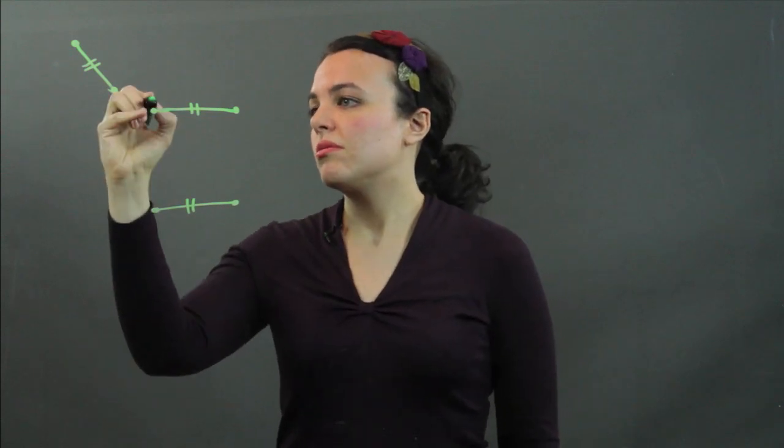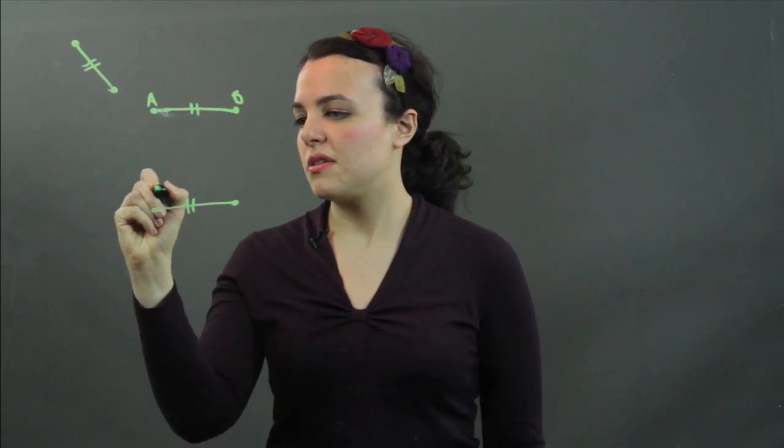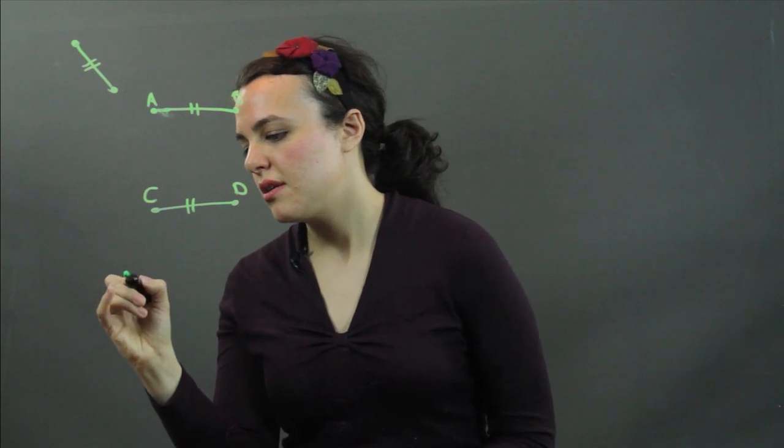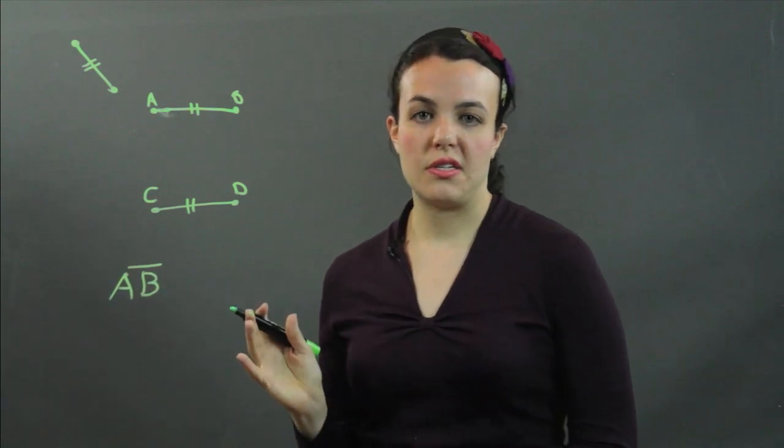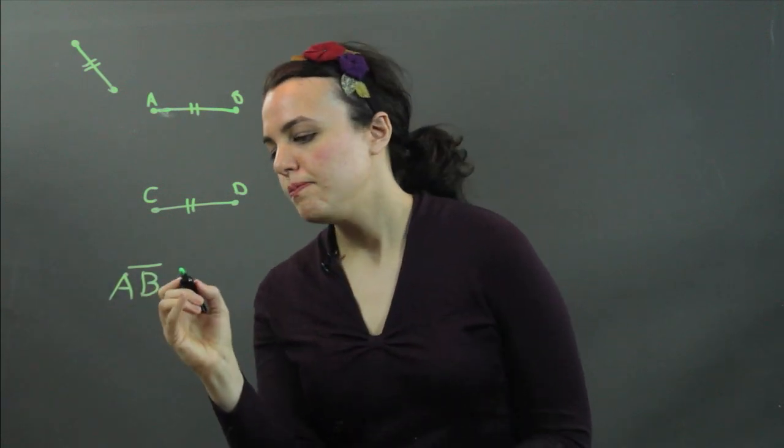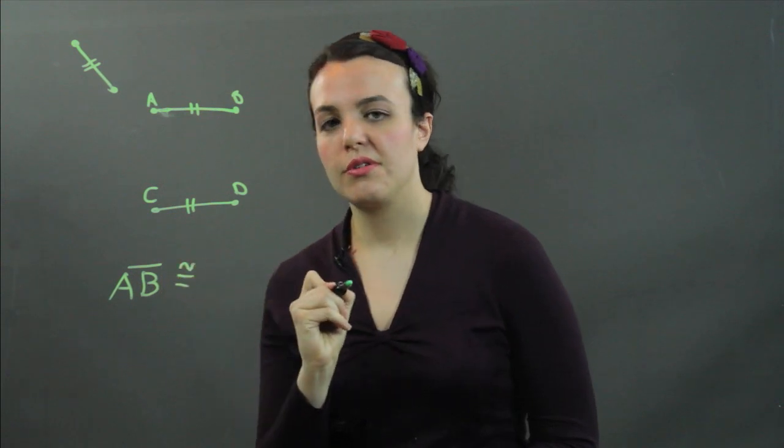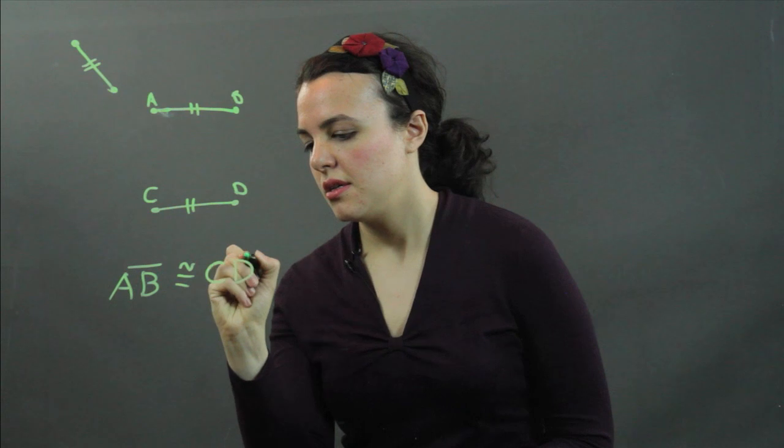The way that you write it out, if this is segment AB and if this is segment CD, we would write AB and you put a little line over it, that shows that it's a segment, not a line, is congruent. And there's the symbol for congruency to segment CD.